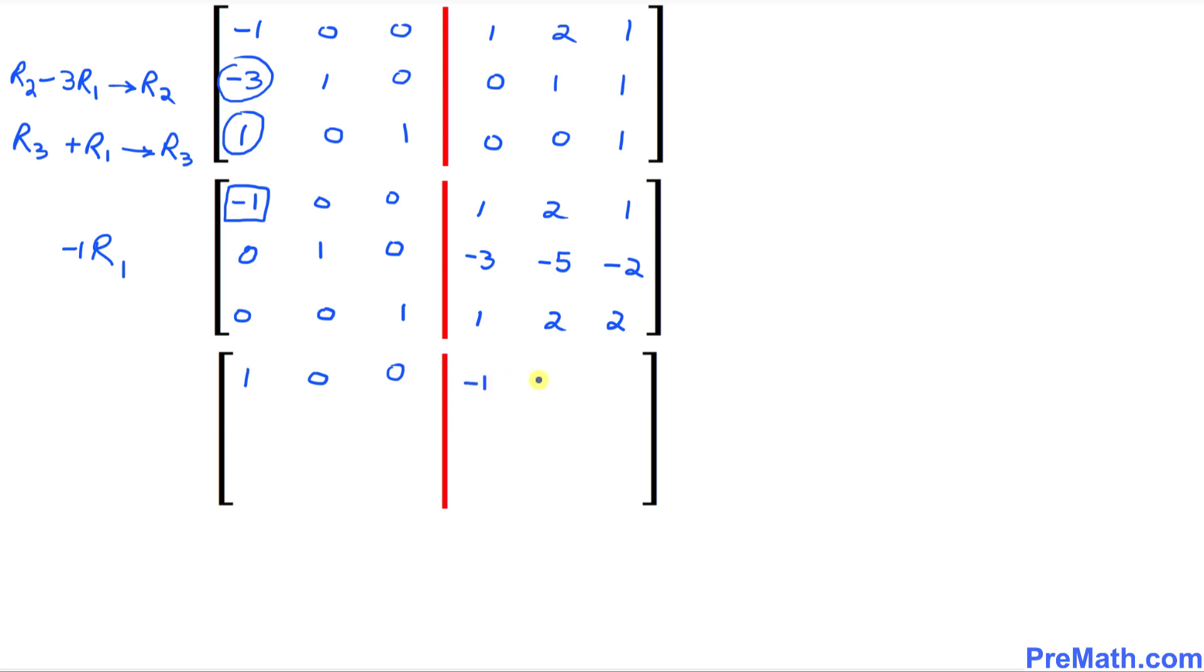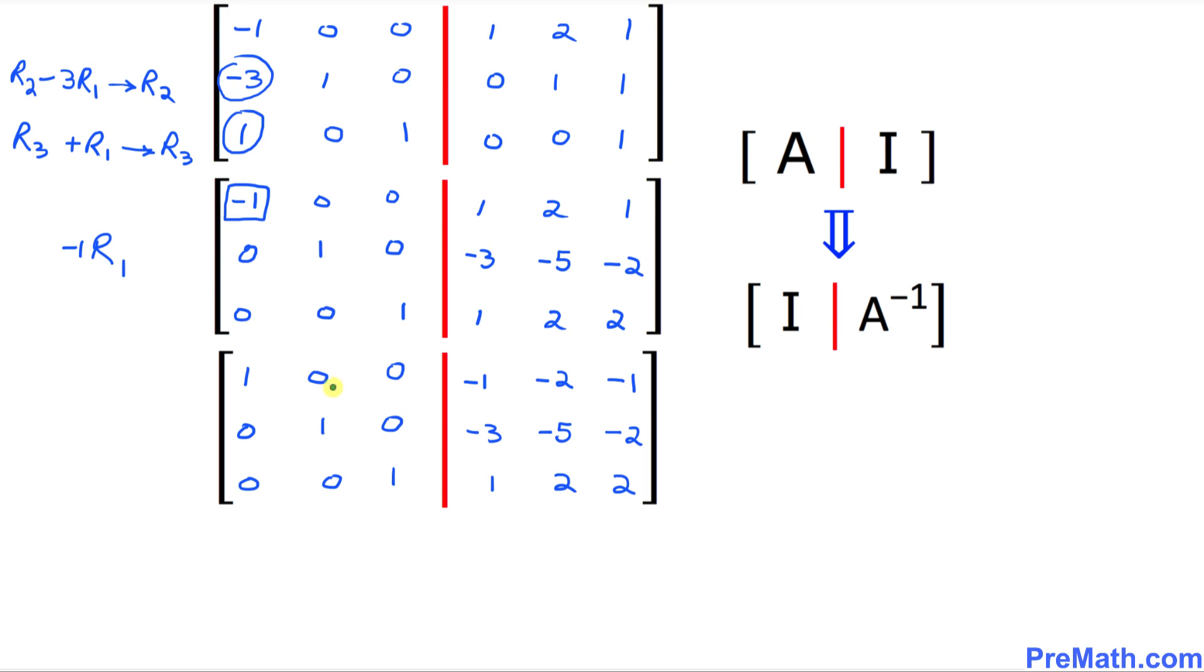That is going to become 1 0 0 and on the right hand side this becomes negative 1 negative 2 negative 1. The rest is going to stay the same: 0 1 0 negative 3 negative 5 negative 2 and finally 0 0 1 1 2 2.